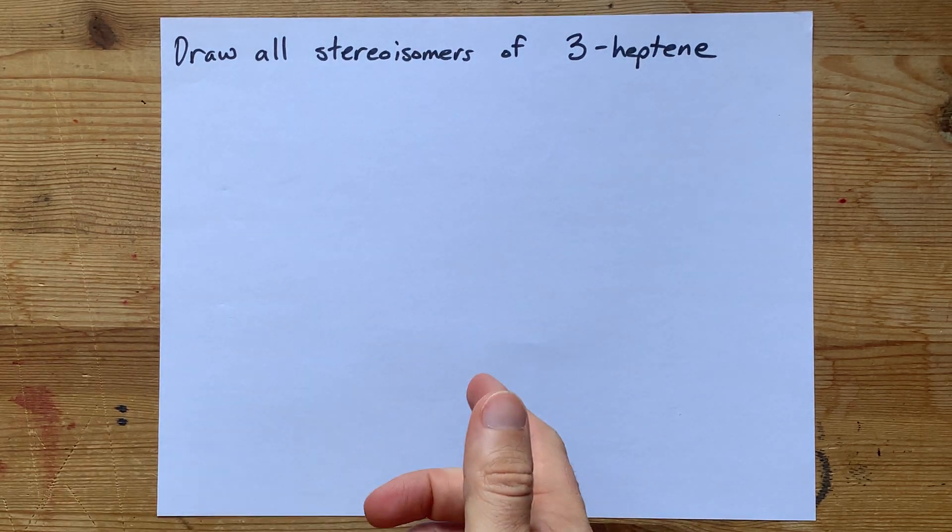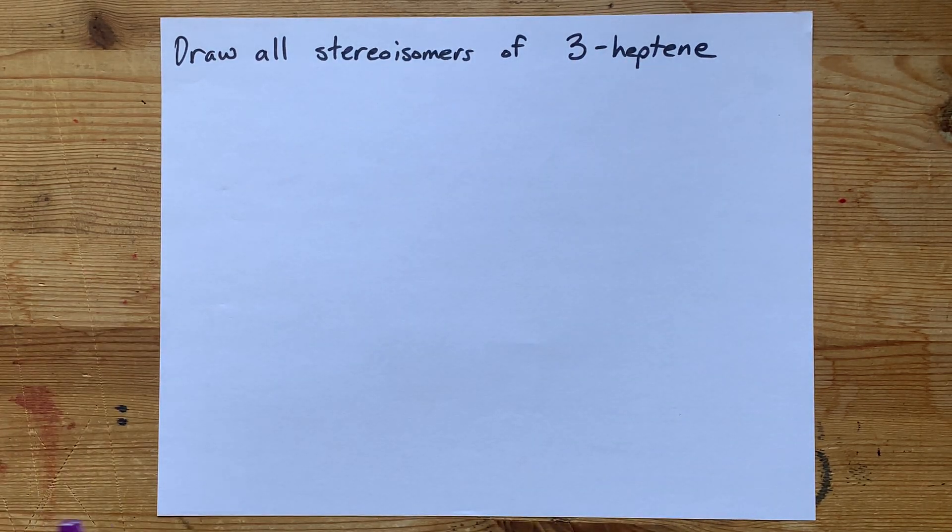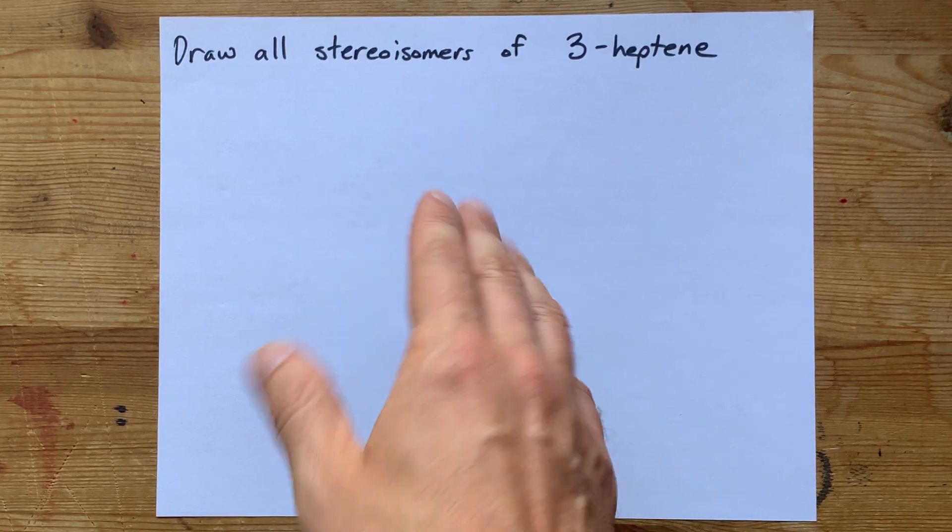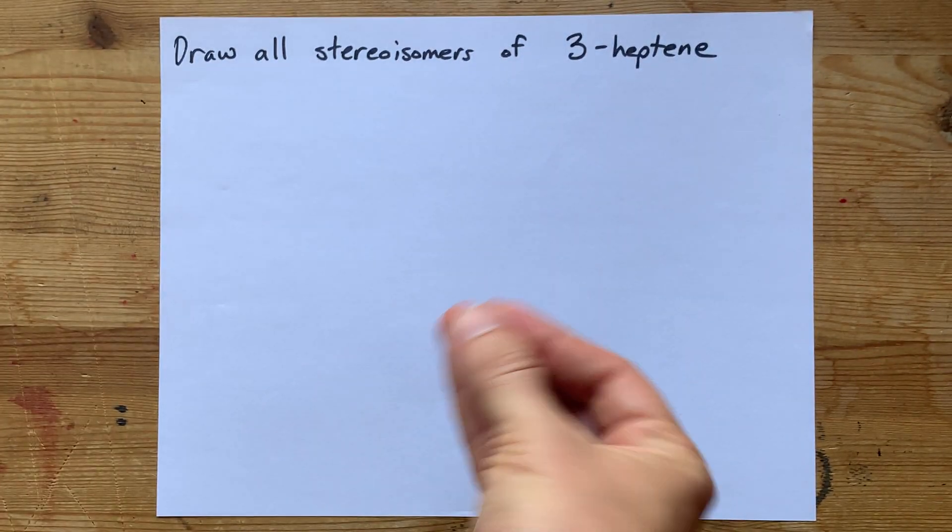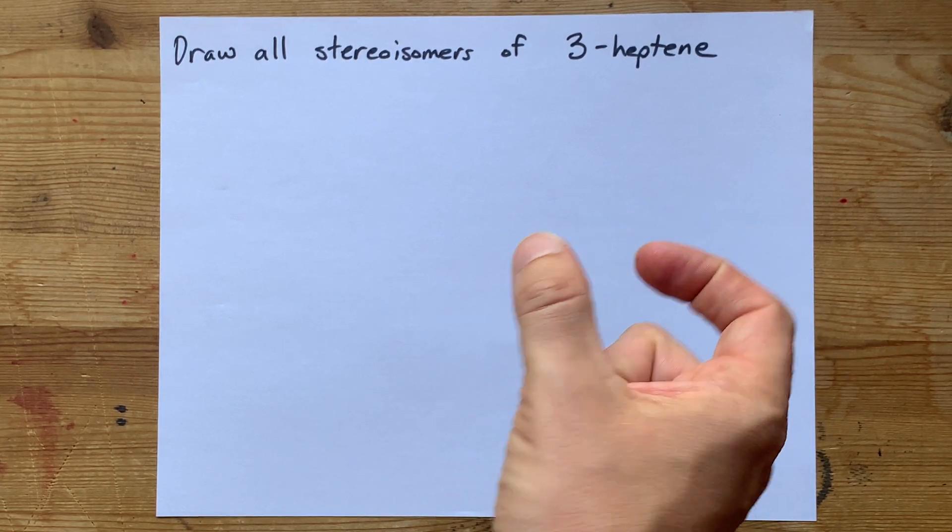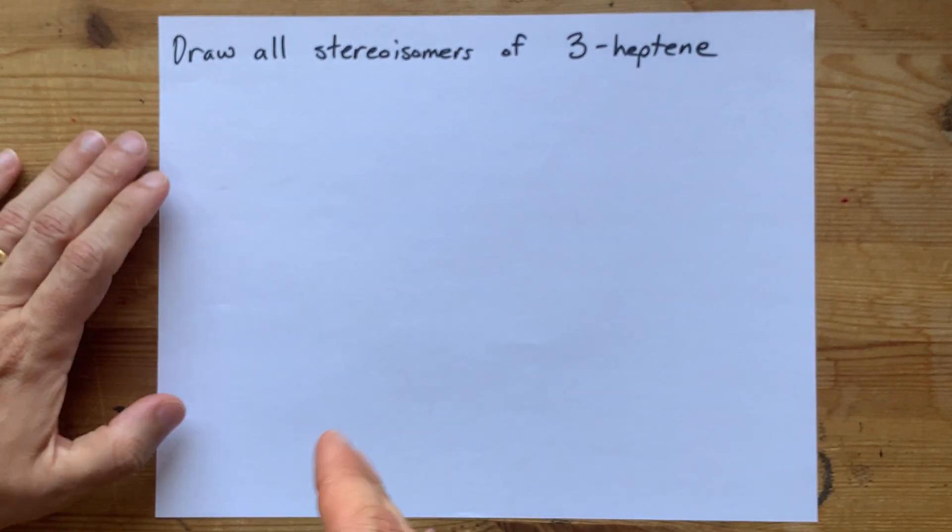We're going to draw the stereoisomers for 3-heptene. Now, stereoisomers can mean both cis and trans, or E/Z isomers around a double bond, or R and S enantiomers if there are chiral centers.